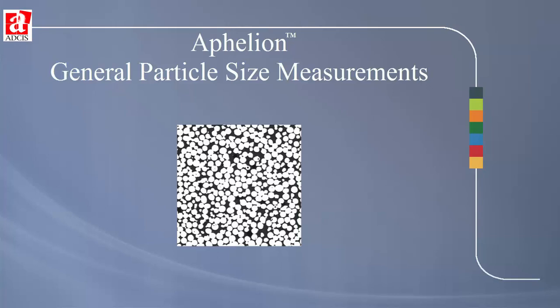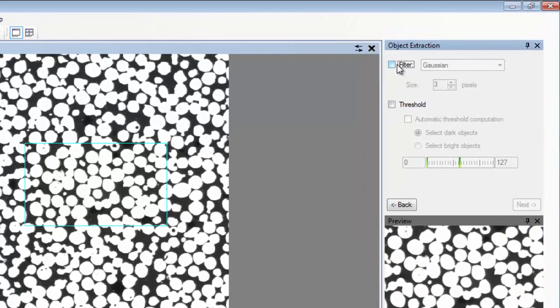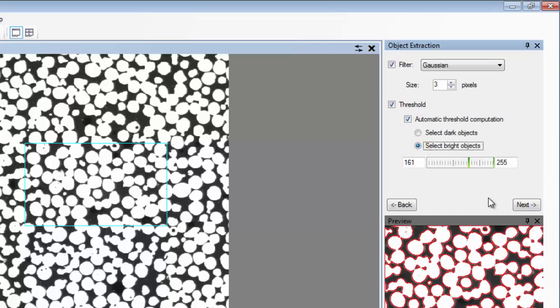As an example, with this image we can easily obtain the particle size distribution. We verify the calibration of the image, then select a Gaussian filter to reduce noise due to imaging.